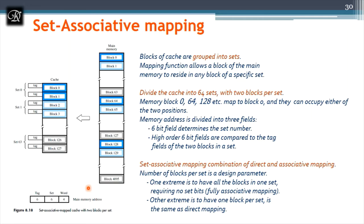For the same 16-bit configuration: 4 bits for word offset, 6 bits for set number (64 sets, since 2^6 = 64, with 2 blocks per set: 128 ÷ 2 = 64 sets), and the remaining 6 bits for tag. Tag bits compare the MSB address bits to determine cache hit or miss.